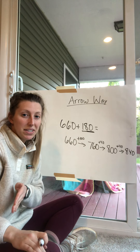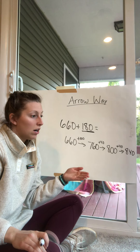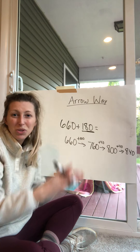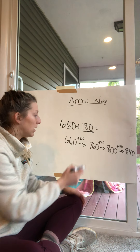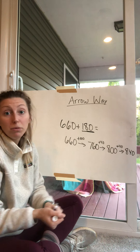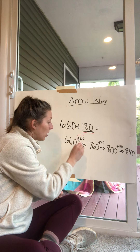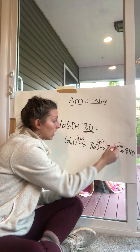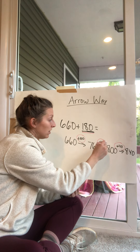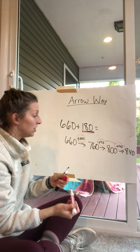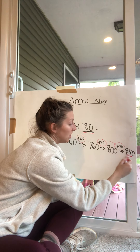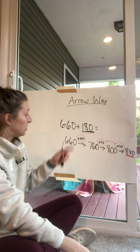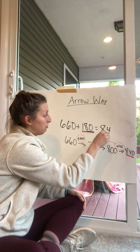We broke it down so we could add it all in our brains — no vertical method needed. Let's double-check: we added 100, then 40, then 40. That's 40 plus 40 equals 80, plus 100 equals 180. We added the full 180 to 660, and our answer is 840.